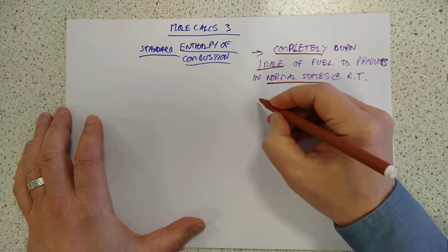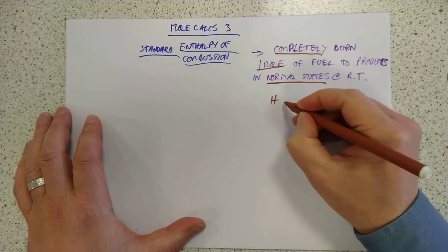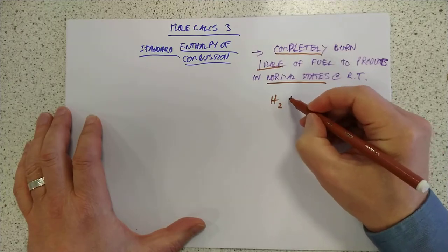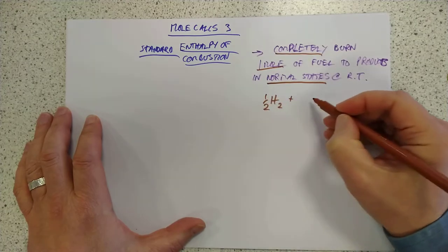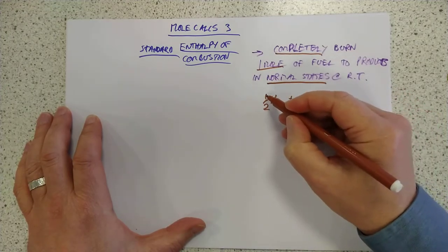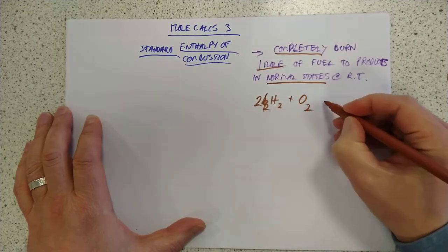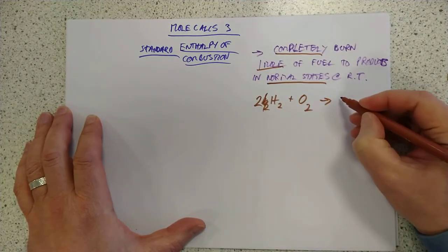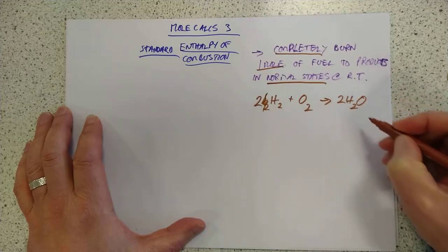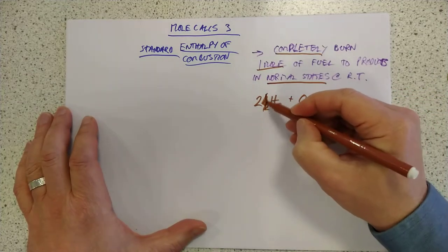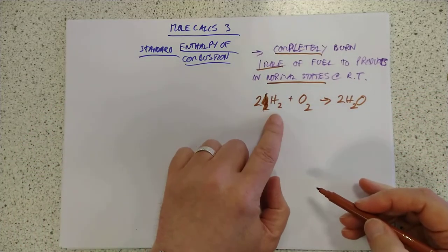For example, if you had this equation here, H2 plus, so you could have, say, that. No, sorry, my apologies. Do that. That would make 2H2O. That is not the standard enthalpy of combustion for hydrogen gas, because you're burning two moles of it.